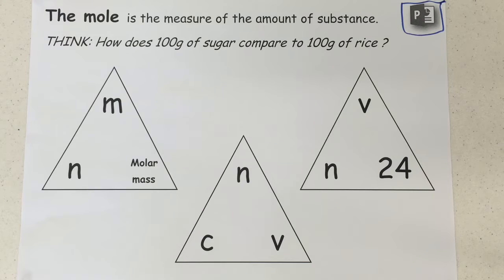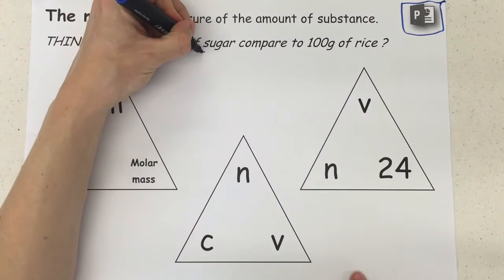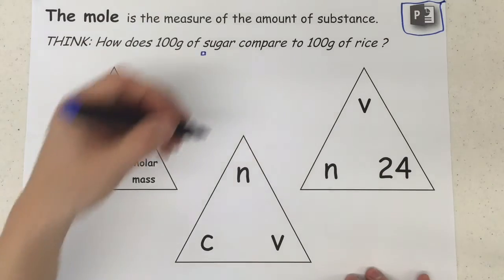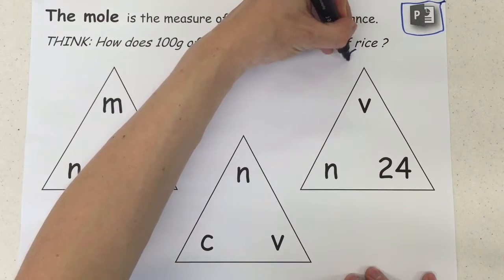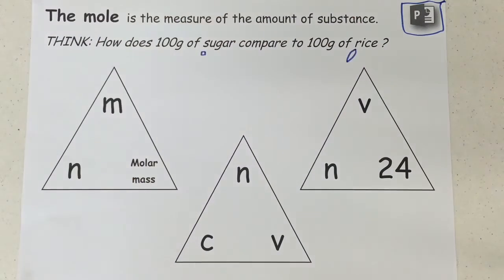I want you to think of the comparison between 100 grams of sugar and 100 grams of rice. They're each made up of grains. The grains of sugar are much, much smaller than a grain of rice. So if I have 100 grams of each, I'm obviously going to have more grains of sugar per 100 grams than I have of grains of rice. The mole is effectively a way of quantifying something along those lines.